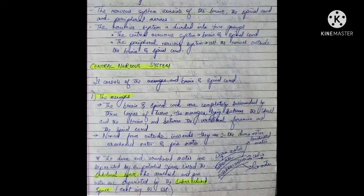From outside inwards, the three layers are the dura mater, arachnoid mater, and pia mater. The dura mater and the arachnoid mater are separated by a potential space called the subdural space, located between the outermost dura mater and the middle arachnoid. Between the arachnoid and the pia mater, there is the subarachnoid space.